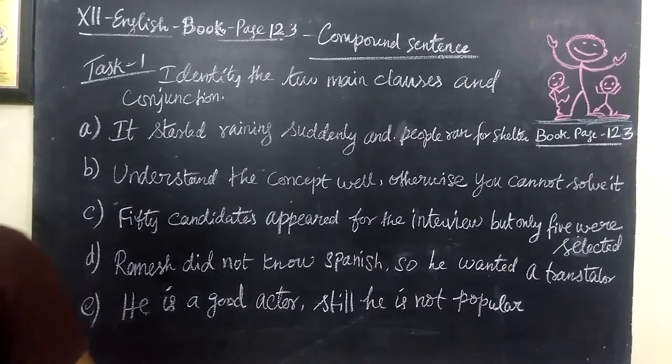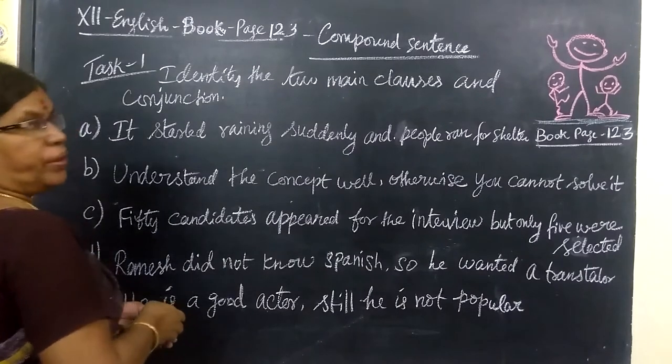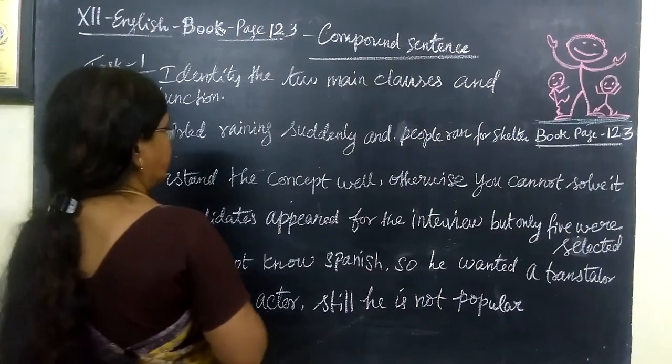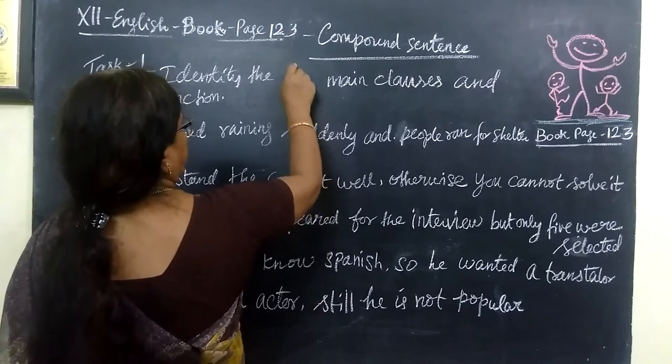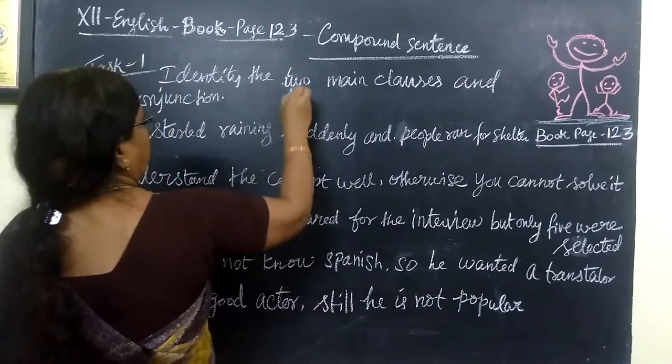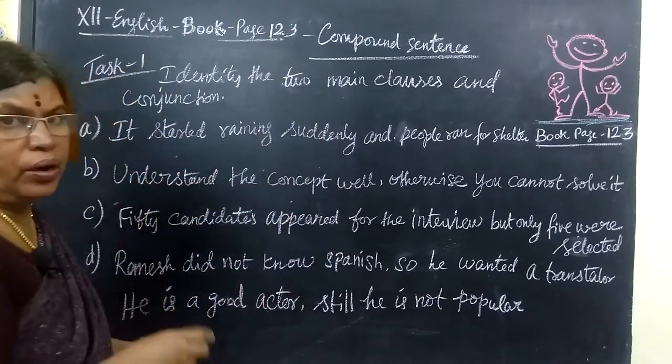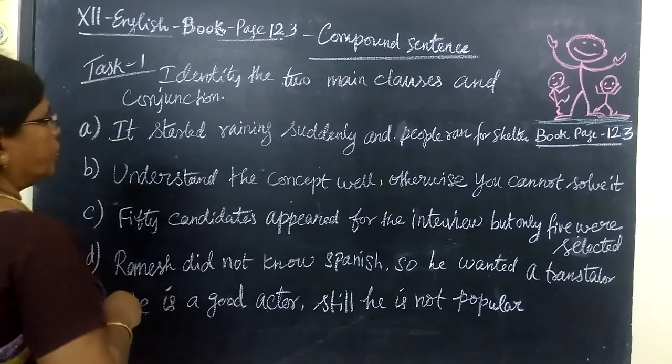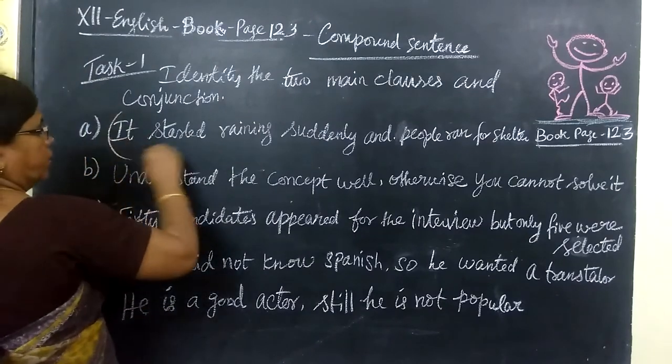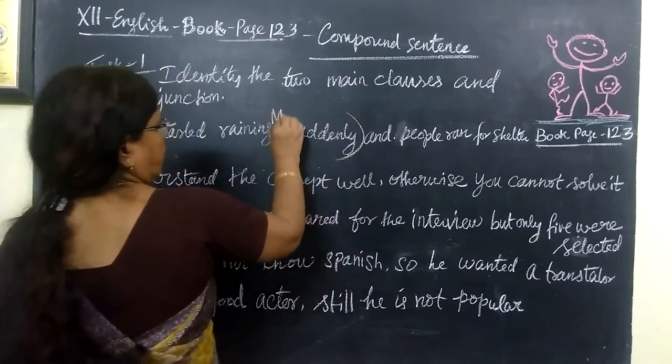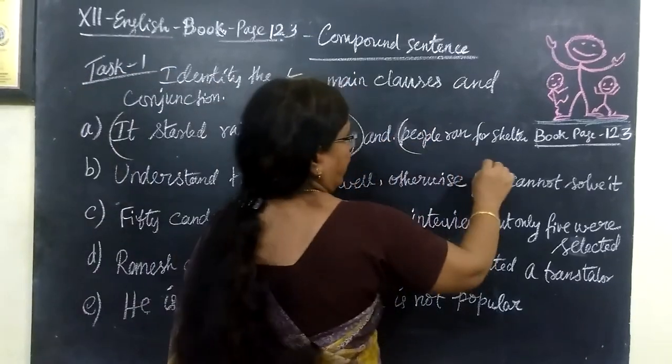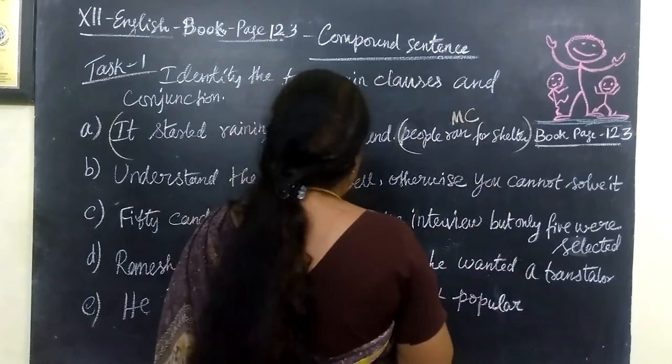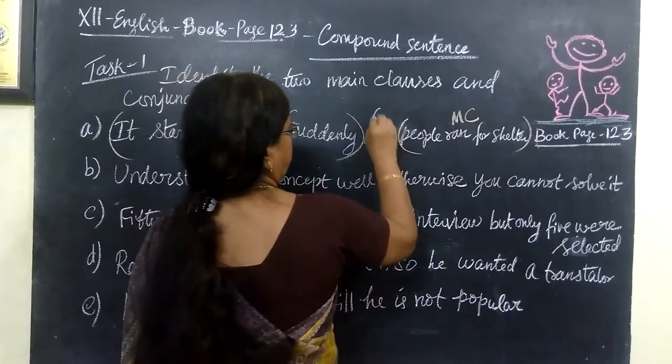You have been given five sentences in page number 123. Identify the two main clauses and conjunction. 'It started raining suddenly' - this is a main clause. 'People ran for shelter' - this is a main clause. And the conjunction.